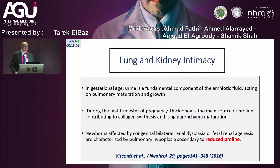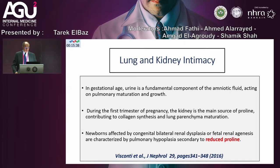Taking you back to the gestational period, this intimacy has a long background. It starts with the amniotic fluid — the amniotic fluid contains fetal urine, which is a very important source of proline. Proline is needed for the maturation of the pulmonary parenchyma, and fetuses born with renal agenesis, hypoplasia, or congenital bilateral renal dysplasia also suffer from pulmonary hypoplasia due to the reduced amount of proline.